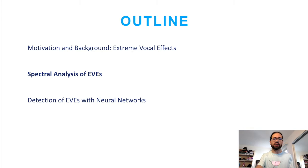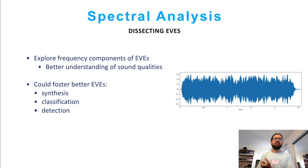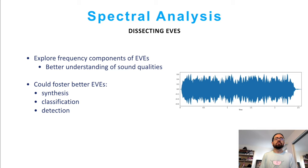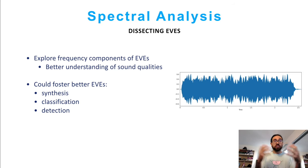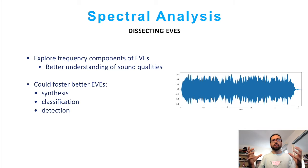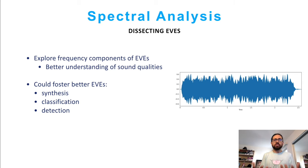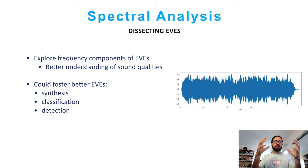Let's move into the second part: spectral analysis of extreme vocal effects. Why do a spectral analysis? This way we can better explore all the frequency components of extreme screams, which will give us better understanding of sound qualities and hopefully foster better synthesis, classification, detection, and pedagogical features. Just looking at a time-domain signal of a growl, we can't really tell much — it could be anything. That's why we go to the frequency domain instead, using spectrograms.